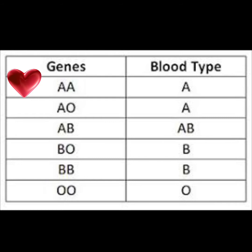Continuing down: a person could have an A allele and a B allele, and since A and B are both dominant — they're co-dominant — that person would have type AB blood. A person could also have one B allele and one O allele, and since B is dominant over O, that person would have type B blood. A person could also have two B alleles, giving them type B blood again. And last but not least, a person could inherit two O alleles. Since O is recessive, that person will have type O blood.